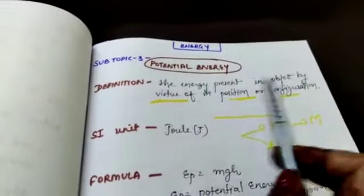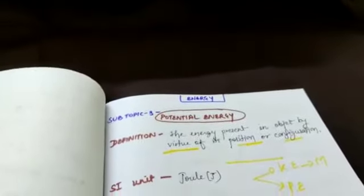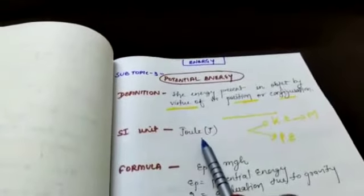The energy present in an object by virtue of its position or configuration. Suppose this pen is away from the surface of earth at a height. So this pen is having potential energy. My hand is up, so this one is also having potential energy. And configuration, I am folding the pages of this copy. So this is having potential energy. If there is change in configuration also, then it is having potential energy. As this one is energy, so SI unit is Joule.